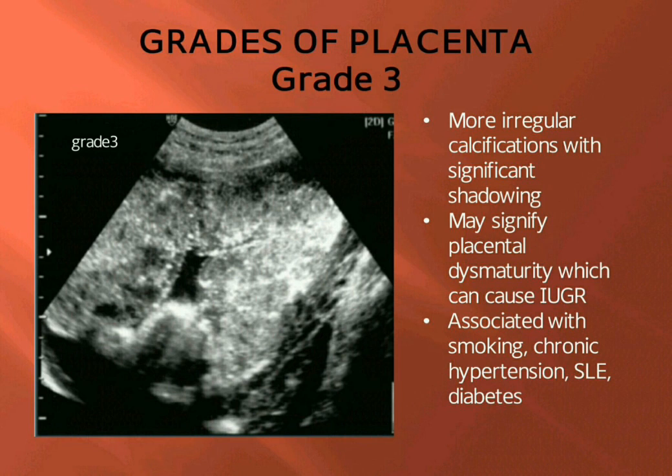Grade 3 may signify placental dysmaturity, which can cause intrauterine growth retardation. It is associated with smoking, chronic hypertension, systemic lupus erythematosus, and diabetes.